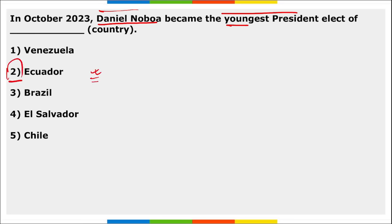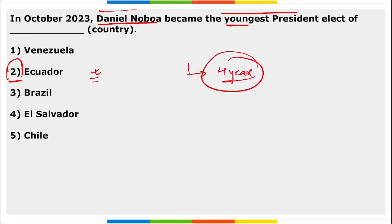Remember, he will serve out the term of President Guillermo Lasso, which was scheduled until 2025, but now he will be continuing this position. He has been elected to this position for four years — generally the President is elected for four years.